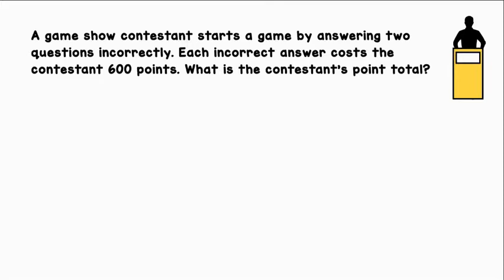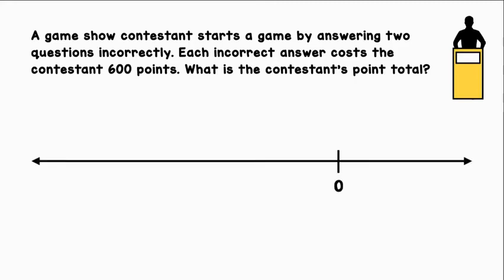A game show contestant starts a game by answering two questions incorrectly. Each incorrect answer costs the contestant 600 points. What is the contestant's point total? Let's use a horizontal number line to represent this situation. There are two incorrect questions, and each costs 600 points, so that can be represented with a negative 600.